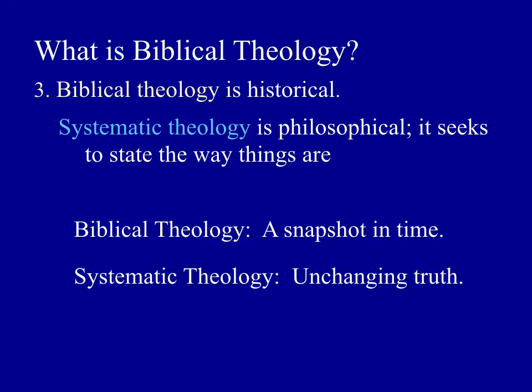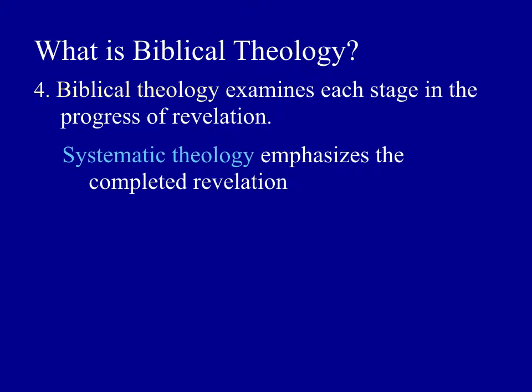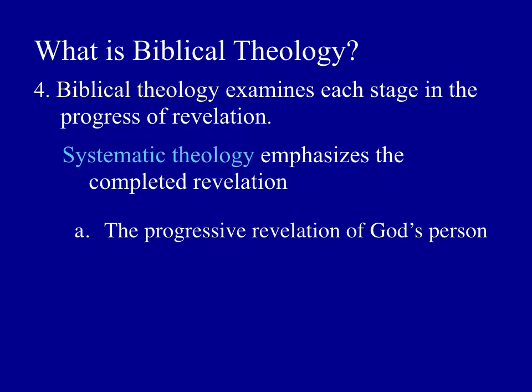A fourth distinction: biblical theology examines each stage in the progress of Revelation, whereas systematic theology emphasizes the completed Revelation. We could break down progressive Revelation into categories — for example, the progressive revelation of God's person. Take the doctrine of the Trinity: in the Old Testament, we don't get a clear statement of the Trinity; the unity of God is emphasized instead. You have the Shema, the great Jewish confession of faith from Deuteronomy chapter 6: 'Hear, O Israel, the Lord our God, the Lord is one.' Only in the New Testament is his Trinitarian nature emphasized — one God who reveals himself in three distinct persons.